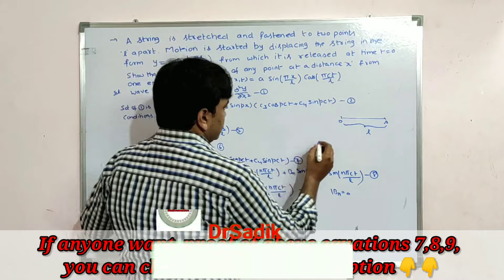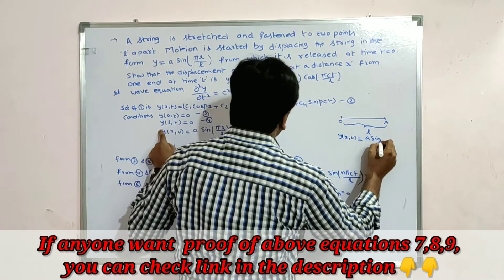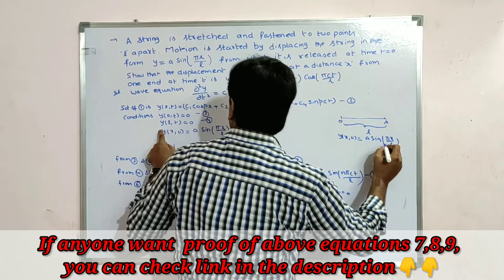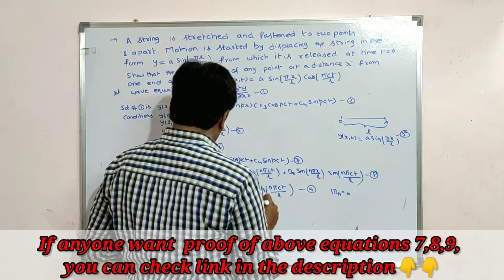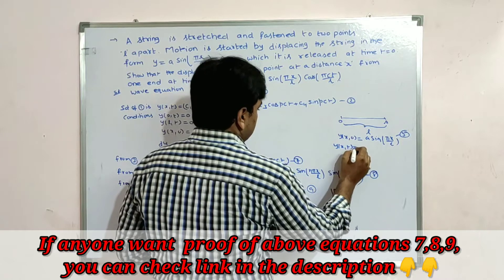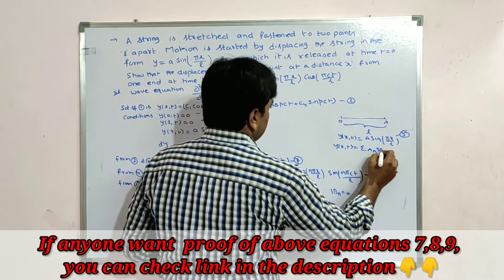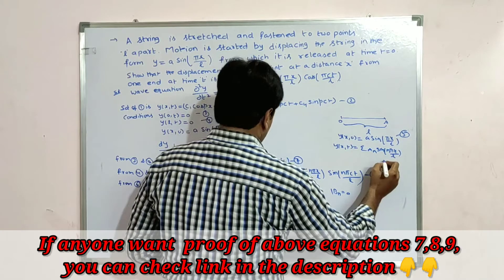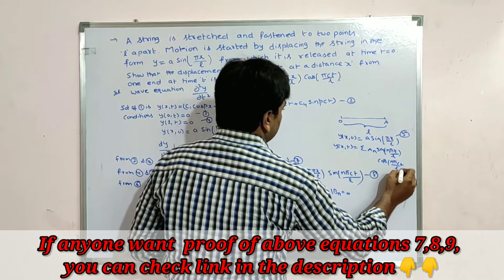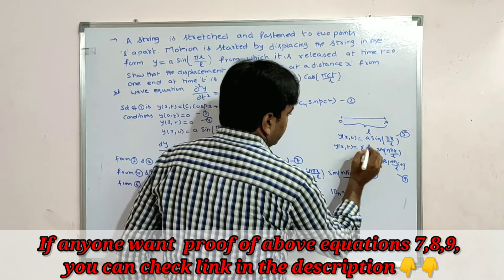Now I want to apply the initial displacement condition. We need y(x, 0) = a sin(πx/L) (equation 5), and the current solution is equation 9: y(x, t) = Σ aₙ sin(nπx/L) cos(nπct/L). Using these two conditions together, I want to find the value of aₙ.